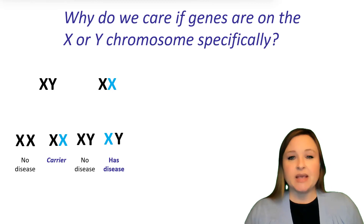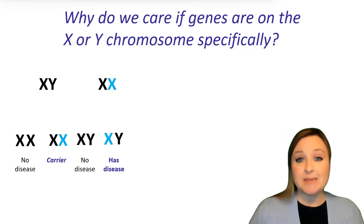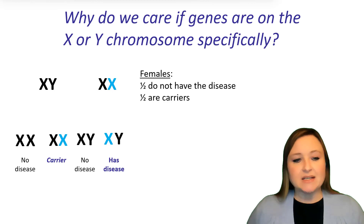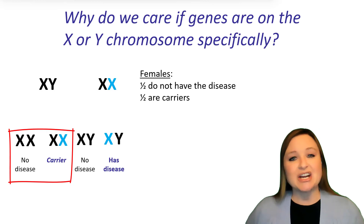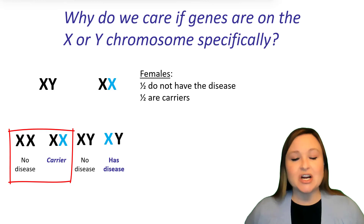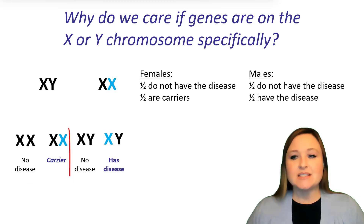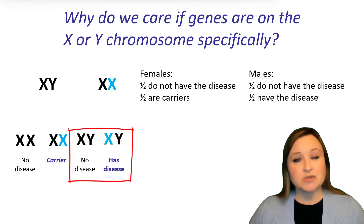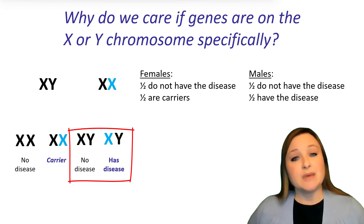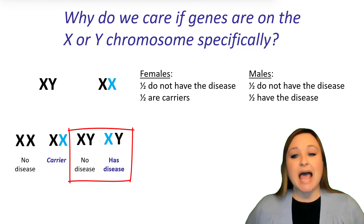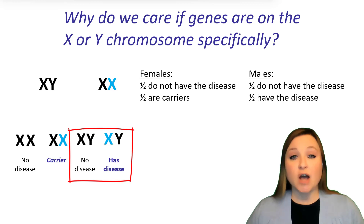So let's look at the ratios. When we're looking at the sex chromosomes, we need to look at the ratios overall, but we also need to look at the ratios in females and males separately. In the females, half will not have the disease and the other half will be carriers — a 50% chance that a female offspring will be a carrier. When we look at the males, half receive the normal X chromosome from mom and will not have the disease. On the other hand, the males that receive the X chromosome with the mutation will have the disease. So half of the males will have the disease, and half will not.